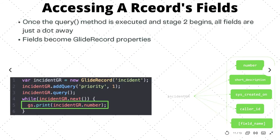As we saw, we can access any field of the current object by adding a dot and the name of the field. Once the query method is called and the object is iterated to a record, the field becomes a property of the current record object. Keep in mind that we use the field name in the script, not the field label. For example, to access the contact type field, we would use contact_underscore_type rather than the display label 'Contact Type'. Every field has two components: the label which is the display name, and the field name or column name which is the actual name stored in the database. We always use the actual field name.